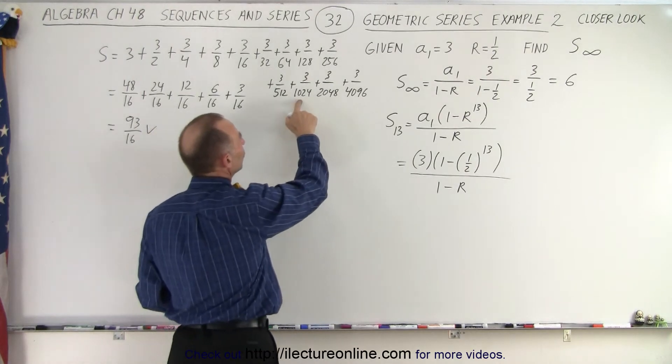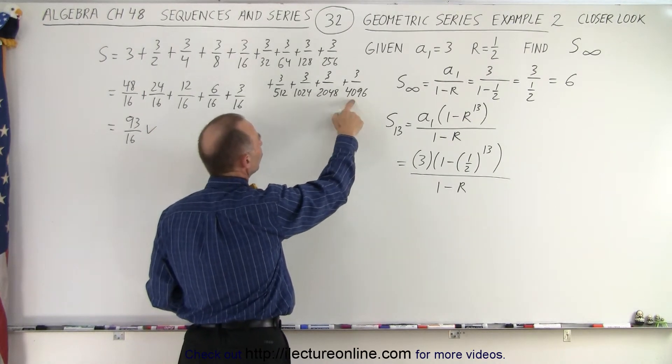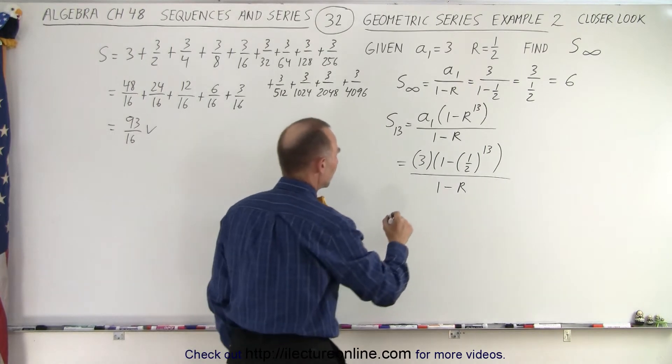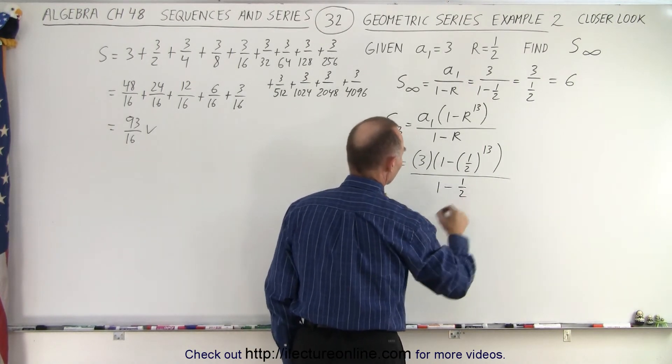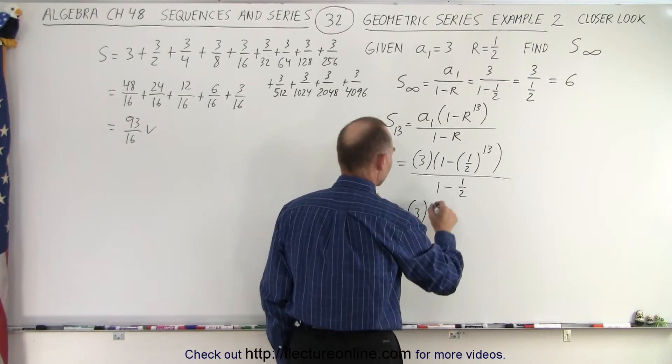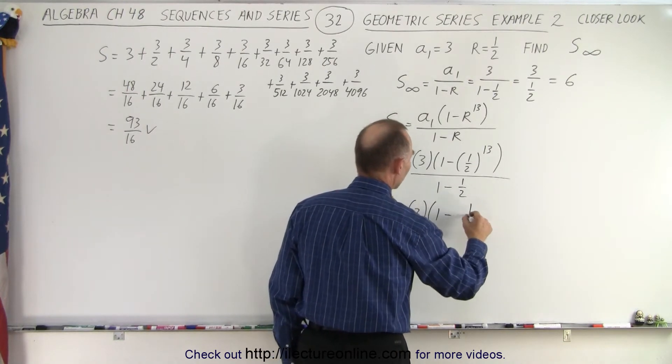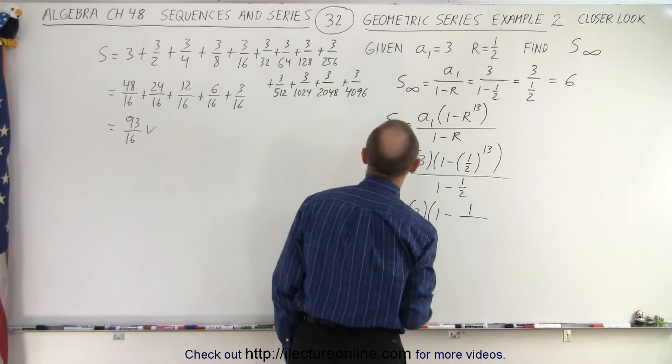This is 2 to the 10th power, 2 to the 11th, 2 to the 12th. So in essence that would be equal to... Oh and I forgot to put 1 half in here. Let's put a 1 half in there. So we get 3 times 1 minus 1 over 2 to the 13th power.